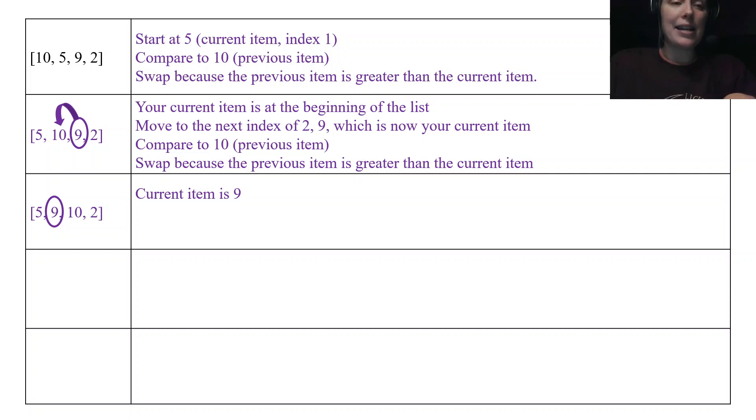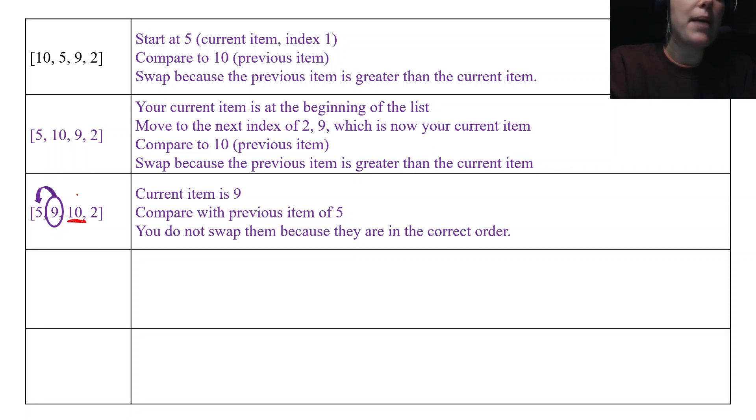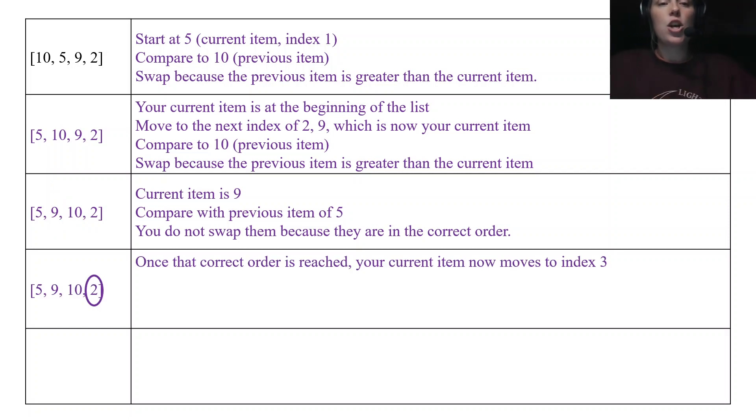So your current item is 9 and you compare with your previous item of 10. And you don't swap them because you're in the correct order. So again, we're looking back. This is how your algorithm is going to pick out the file of where to insert it. It's going to keep looking back at the previous item and say, is 9 less than 10? Perfect. Is 9 less than 5? No. Then that means that 9 is in the correct position. We have inserted the file into where it's supposed to be. So that section stops, that loop stops, and I move up 1.